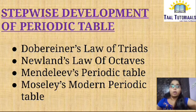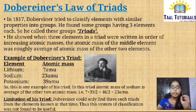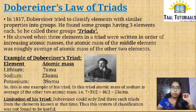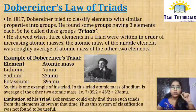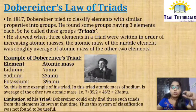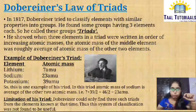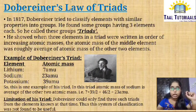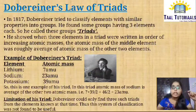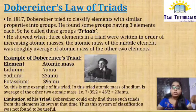First, we will know about Dobereiner's Law of Triads. In 1817, Dobereiner tried to classify elements with similar properties. He grouped elements with similar properties and found some groups of three elements, so he called them triads. He showed that when three elements are present, the middle element's atomic mass is the average of the other two atomic masses. For example, taking Lithium (7 amu), Sodium (23 amu), and Potassium (39 amu): the average of Lithium and Potassium is (7 + 39) / 2 = 23 amu, which equals Sodium's atomic mass.